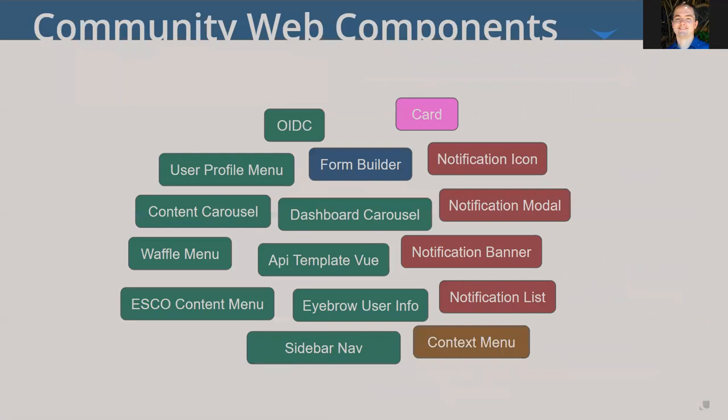These are the web components available from the uPortal community — known to work well with uPortal. There are hundreds of other web components out there and nothing stops anyone from adding others to their uPortal instance, but these were created specifically for uPortal. The green web components are all part of one initial repository. As they were built out, it was realized it would be better to separate them by primary function — for example, the four notification web components are all in a different repository. Documentation on all of these is available on uPortal Contrib.